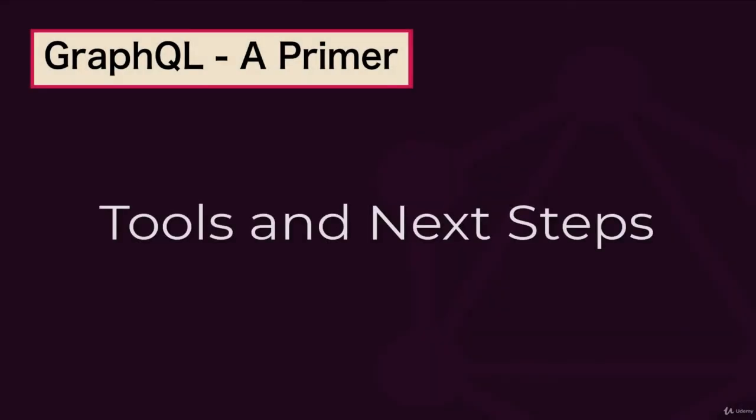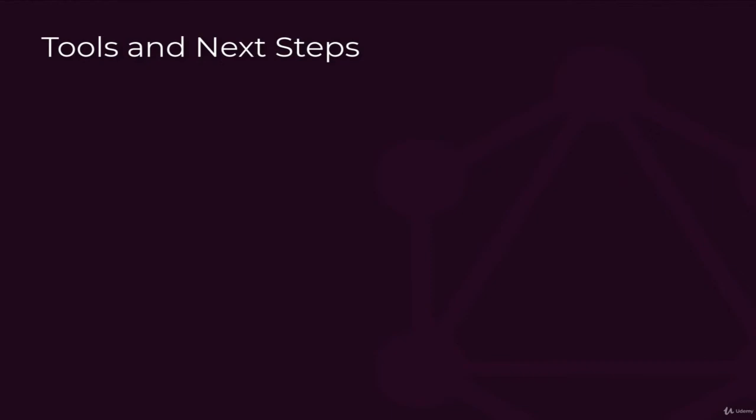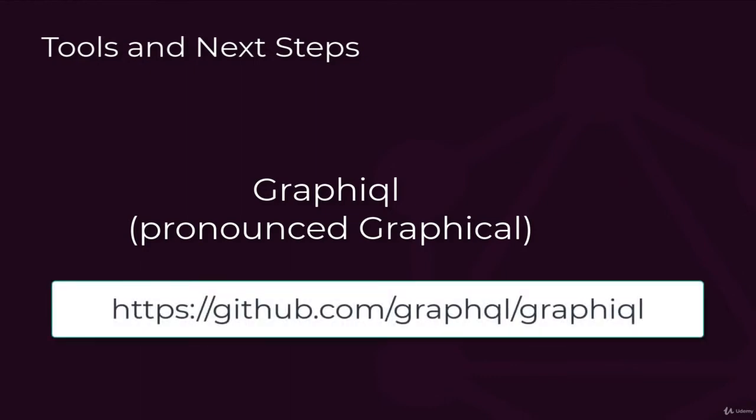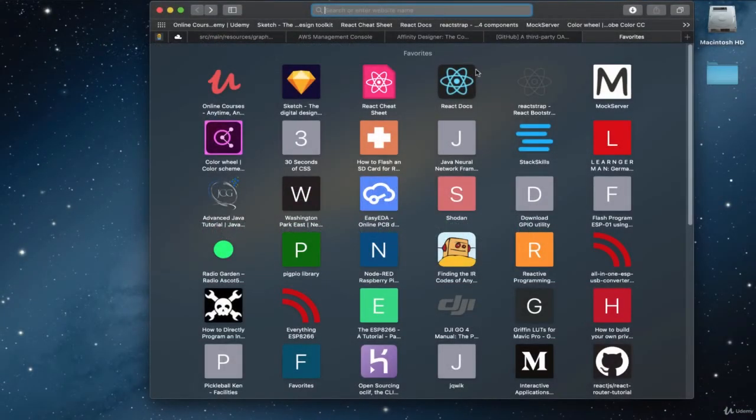In our final section, let's take a look at a couple of tools you might find useful, then we'll look at some options for next steps. The tool I've probably spent the majority of my time in while developing GraphQL interfaces is called Graphical. It's an Electron application that you can find more information about here. Okay, so let's just take a minute and look at GraphQL.